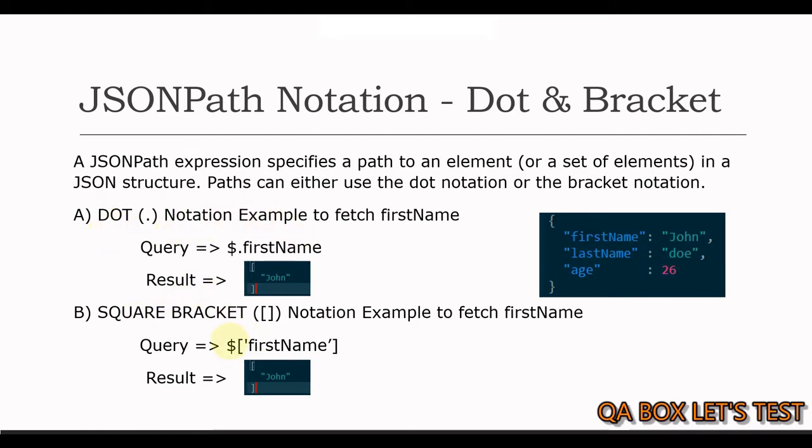Then, you can also say dollar with square brackets inside that you mention the property and make sure that you wrap that inside single quotes. This becomes your square bracket notation. Both of these paths - dollar dot firstName and dollar with square bracket of the property enclosed within single quotes - refer to the same firstName node within this dictionary.